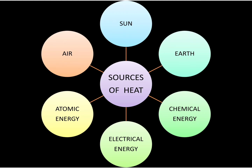Let us now understand about each of them in detail. First, we begin with the sun. The sun is the biggest source of heat received by the earth. The sun produces a large amount of heat due to continuous nuclear fissions which take place in its centre. Some of this heat and light reaches the earth. The heat energy obtained from the sun is called solar energy.